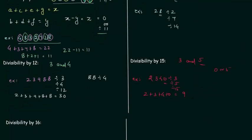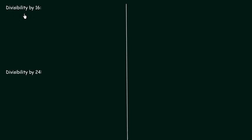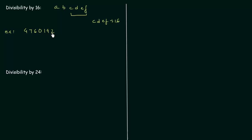Now we will move to divisibility by 16. A number is said to be divisible by 16 if the number formed by its last 4 digits is divisible by 16. So if the number is ABCDEF, we consider the last 4 digits CDEF. Let's take one example: the number is 4760192. The last 4 digits are 0192. 0192 is divisible by 16 and gives us 12. So 4760192 is also divisible by 16.